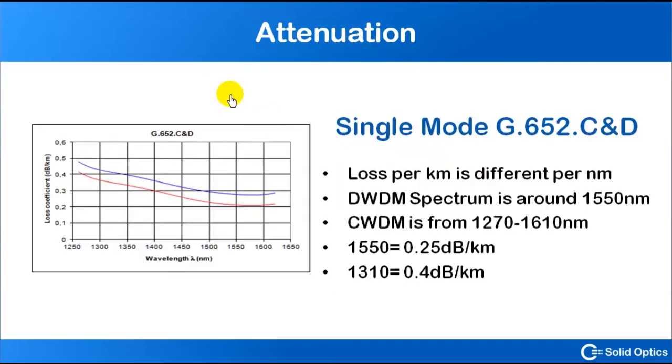One type of single-mode cable is the standard G652.C or .D. The loss of light is depending on nanometers, which means different color has different loss. In the DWDM spectrum, which is around 1550, you've got a lower loss than on the lower band of the CWDM. The CWDM is from 1270 to 1610, and for example 1310 has a loss of 0.4 dB per kilometer, and 1550 has 0.25 dB loss per kilometer.